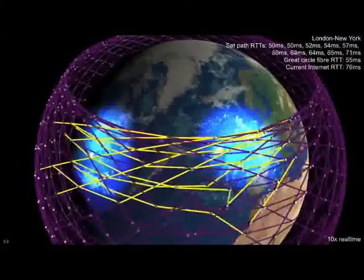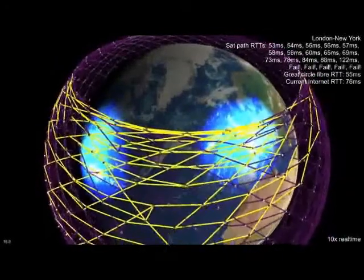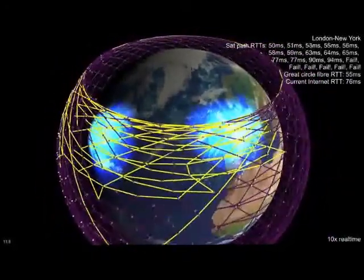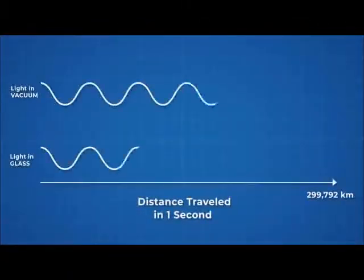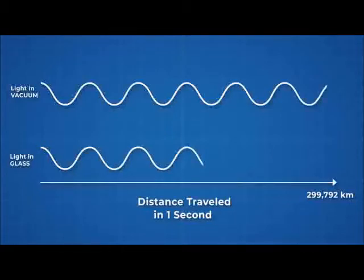Transmitting with light in space offers one massive advantage over transmitting with light here on Earth however. The speed of light is not constant in every material. In fact, light travels 47% slower in glass than in a vacuum.